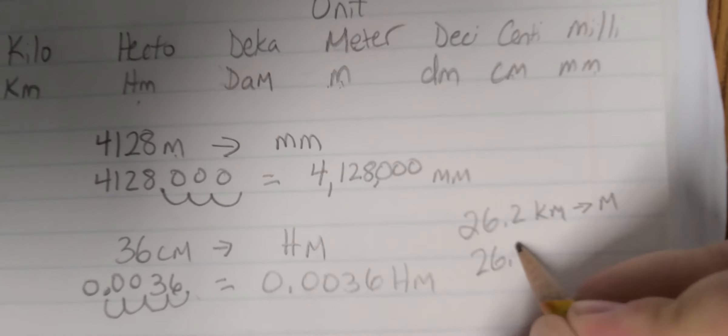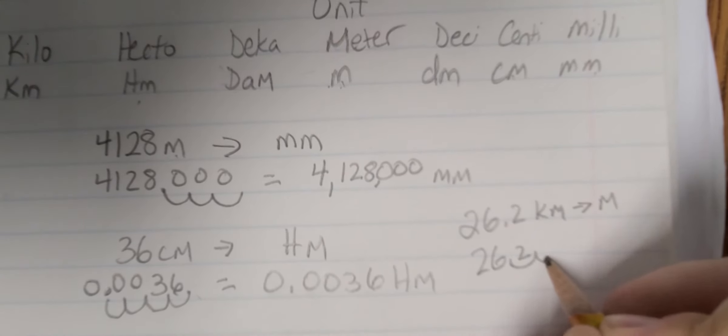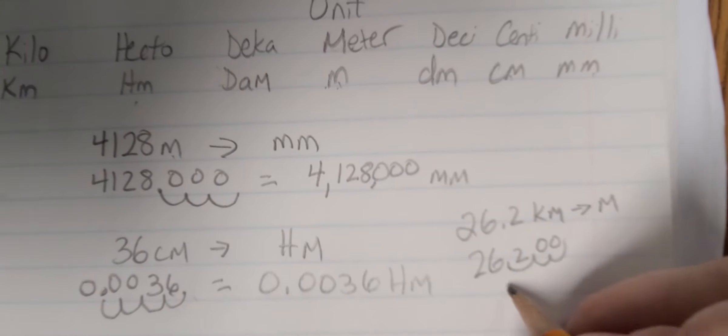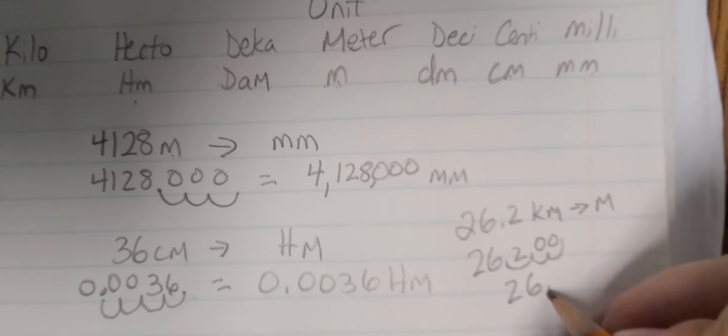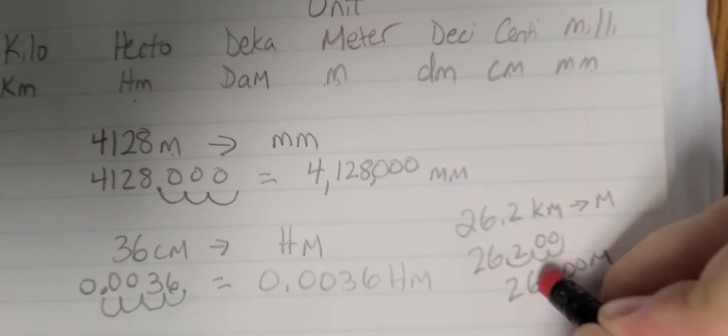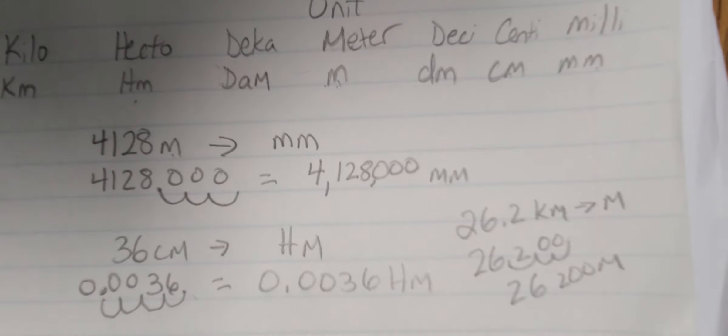So I take my 26.2, 26.2, and I go 1, 2, 3. I add my zeros to get 26,200 meters. In fact, let me raise that decimal point, that comma, so it doesn't look like a decimal point.